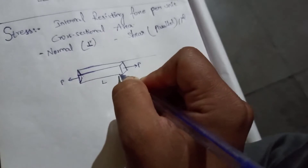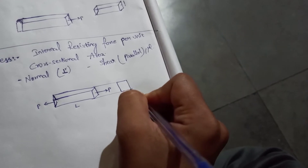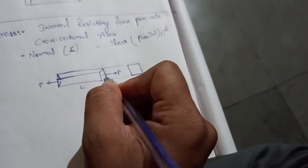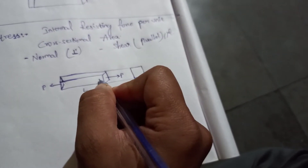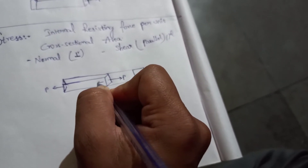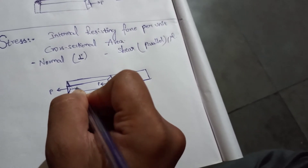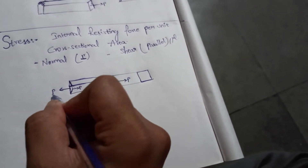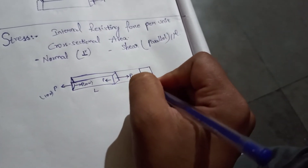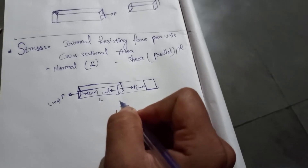There is a tensile load P acting along the rod, and the cross-section is rectangular or square. For this tensile load P, there will be an internal resistance offered by the bar of equal magnitude. If the force is 10 Newtons, the internal resistance is also 10 Newtons; if it is 20 Newtons, the resistance is also 20 Newtons.